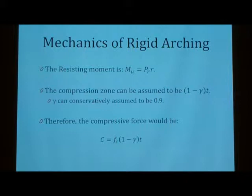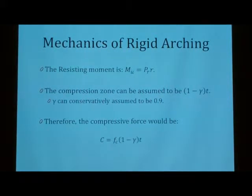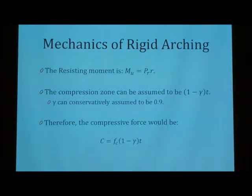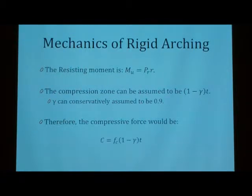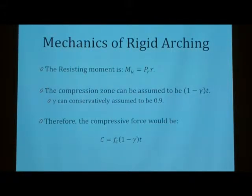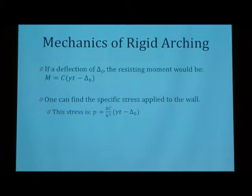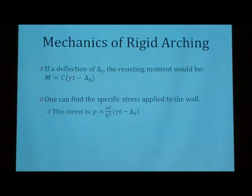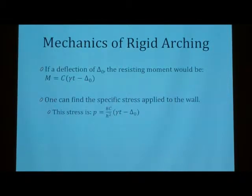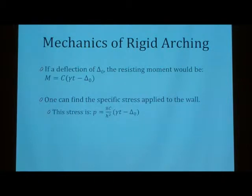And the compression zone, which we showed you, can be calculated by just one minus gamma multiplied by the thickness of the arch, where gamma is assumed to be 0.9 to make it easier on us. So, then we calculate the compression force just by C equals the allowable compression stress multiplied by that compression zone area. So, if you have a deflection of delta-nought, which is an arbitrary deflection, you can actually calculate the resisting moment of the arch by just the compression force multiplied by the compression zone thickness, multiplied in order to track it out by a deflection. And with that, you can actually calculate what kind of stress that the arch can hold, which is kind of like the lateral capacity, essentially. It's just the compression force over the height of the arch squared multiplied by that.